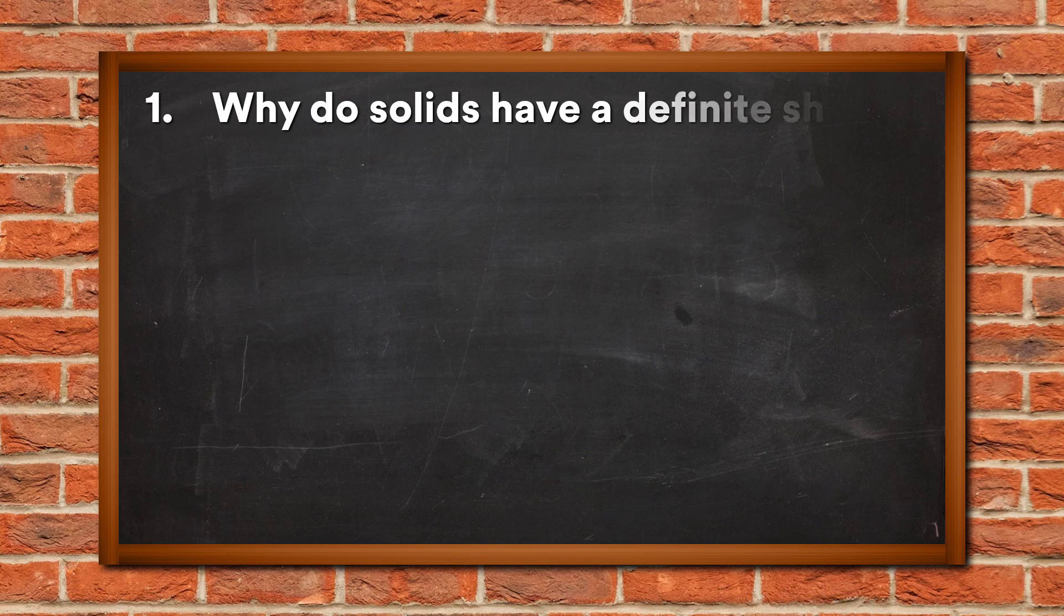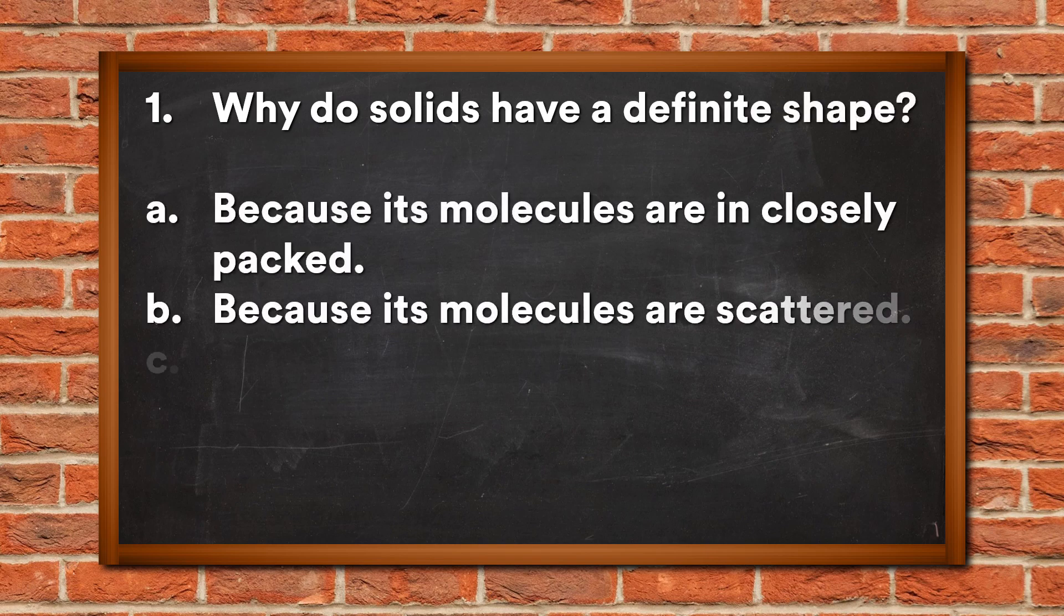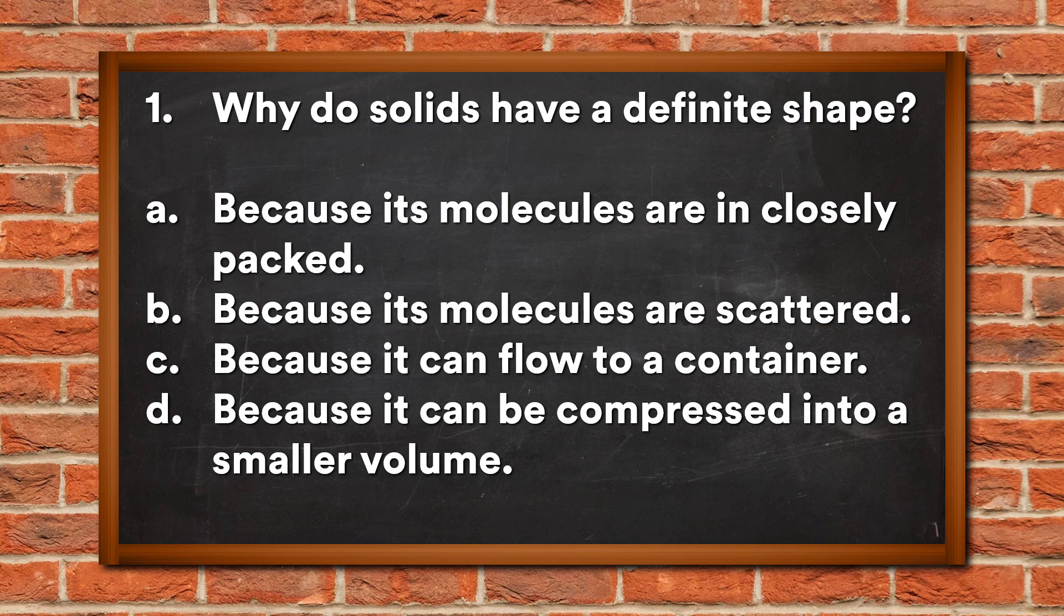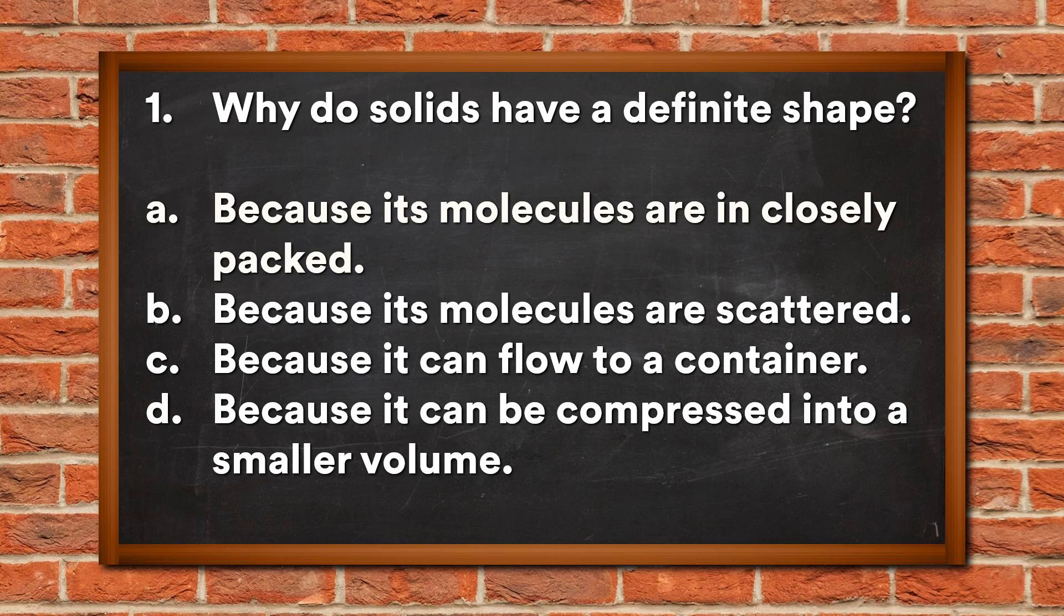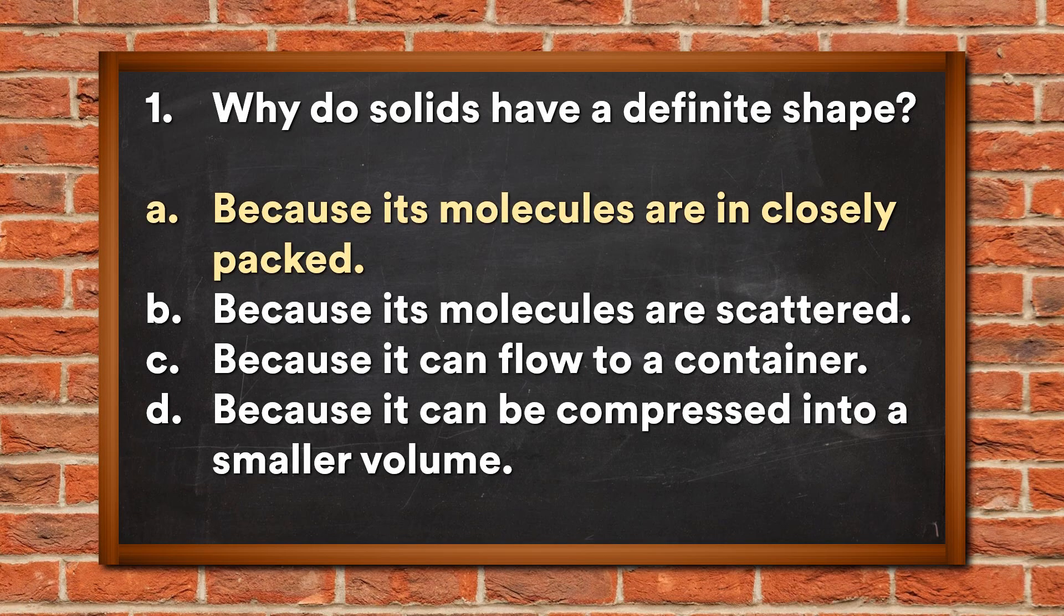Question 1: Why do solids have a definite shape? A. Because its molecules are closely packed, B. Because its molecules are scattered, C. Because it can flow to a container, D. Because it can be compressed into a smaller volume. The answer is A, because its molecules are closely packed.